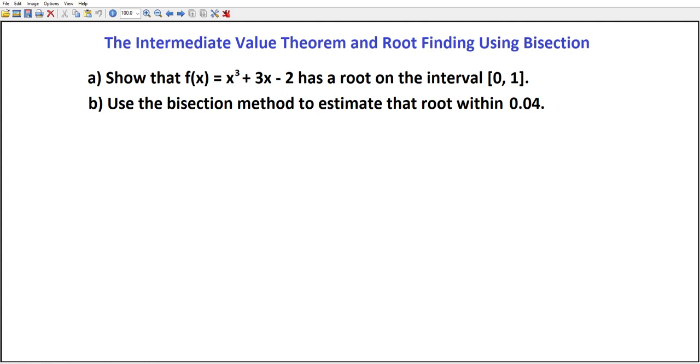The Intermediate Value Theorem and Root Finding Using Bisection. Our task in this video is to show that the function f(x) = x³ + 3x - 2 has a root on the interval [0,1], and then to use the bisection method to estimate the value of that root within 0.04.